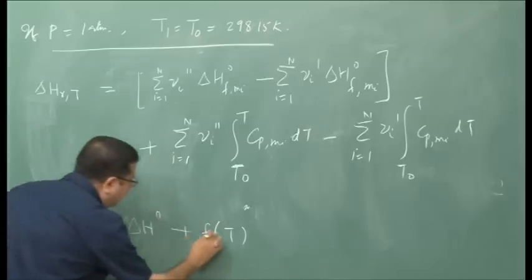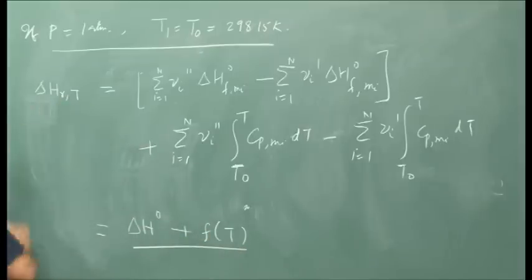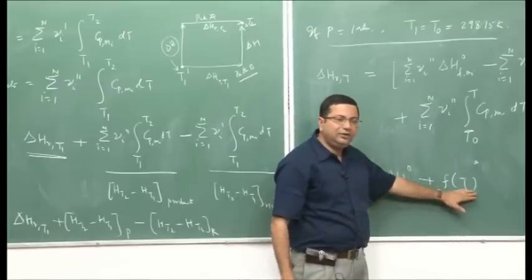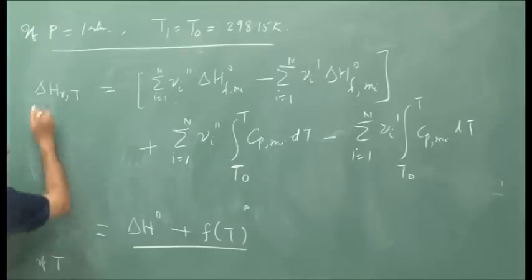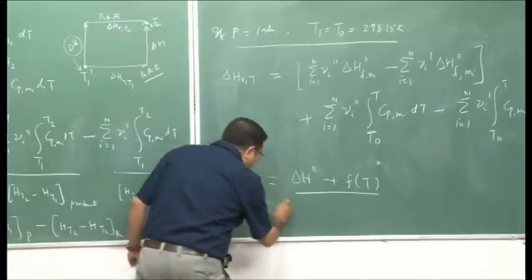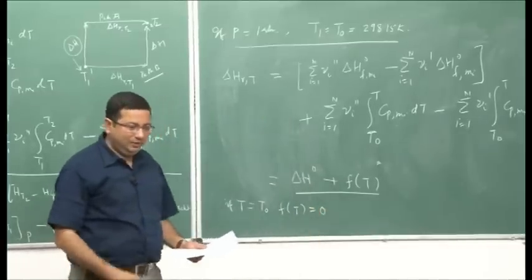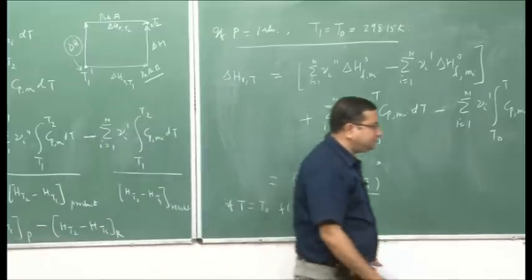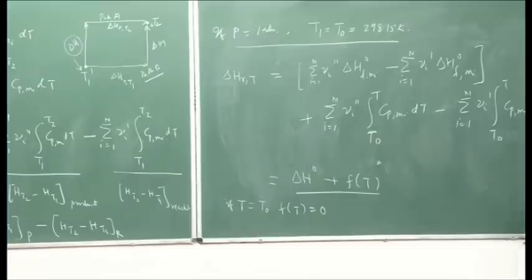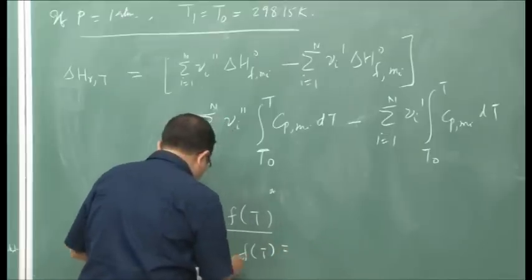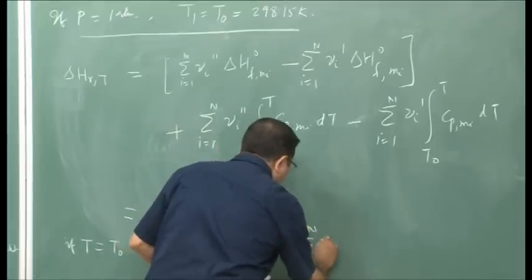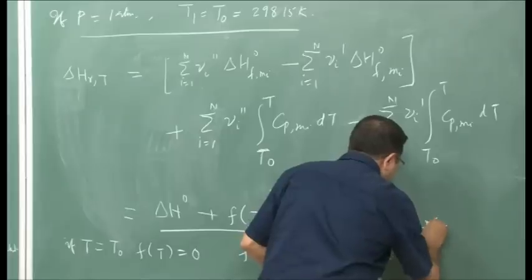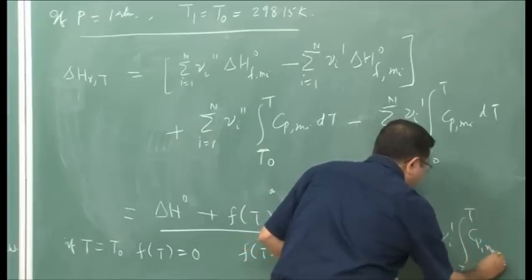We can write: ΔH_r(T) = ΔH°(T°) + F(T), where F(T) is a function of temperature. If T equals the standard temperature, F(T) is zero. F(T) equals: Σ ν_i″ · ∫[T° to T] C_p,mi dT minus Σ ν_i′ · ∫[T° to T] C_p,mi dT.